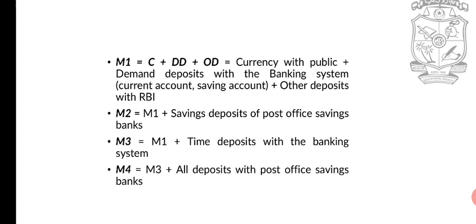The second measure is M2. M2 is equal to M1 plus savings deposits of post office savings bank accounts. So M2 includes everything in M1 plus post office savings account deposits.